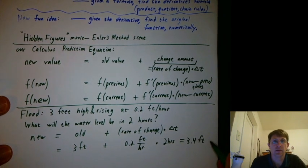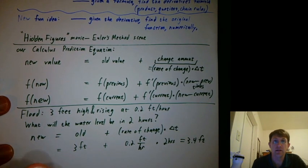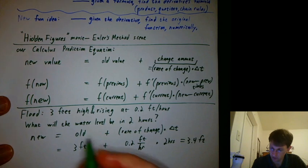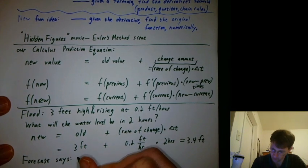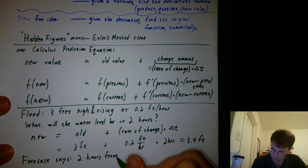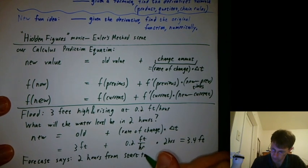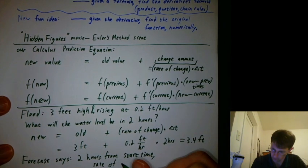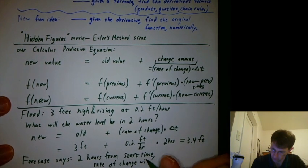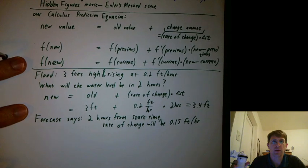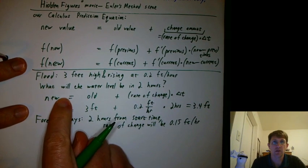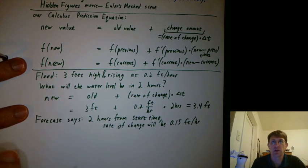Okay, so then the interesting part says, let's suppose that the forecast is that in two hours from when we started, the floodwaters will be rising at a rate of 0.15 feet per hour. And then we could ask, what will the water level be in two hours? Two hours from that point. So, old was time zero. Our new here is time two. And we want to know, what will the floodwater level be at time four?